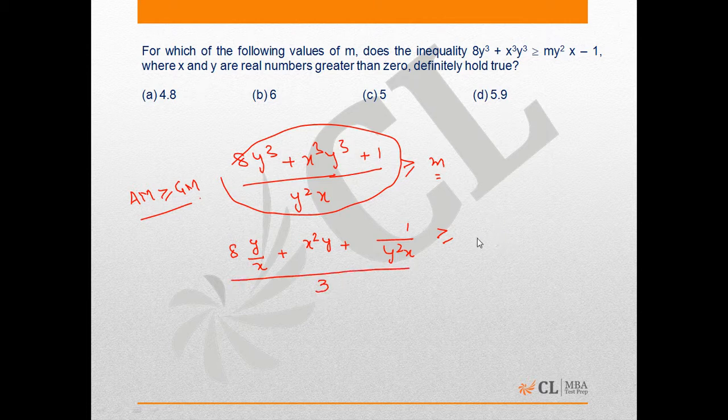Each term divided by 3 times the cube root of these numbers, which turns out to be 8y³/(y²x), and the cube root of that. On solving this...